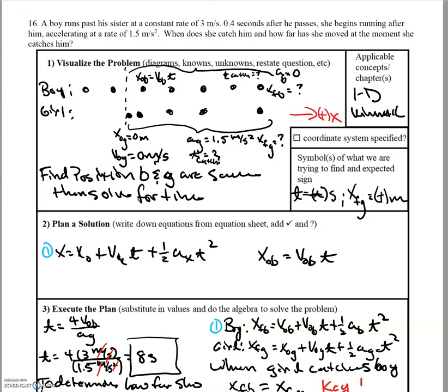So just labeling all of our knowns and unknowns. To be able to solve for the time that it takes to catch him, what do we know about their final positions? To be able to catch somebody means that you and them are in the same spot, which means you and the other person have the same final position. So that's the key here. You both have the same final position.